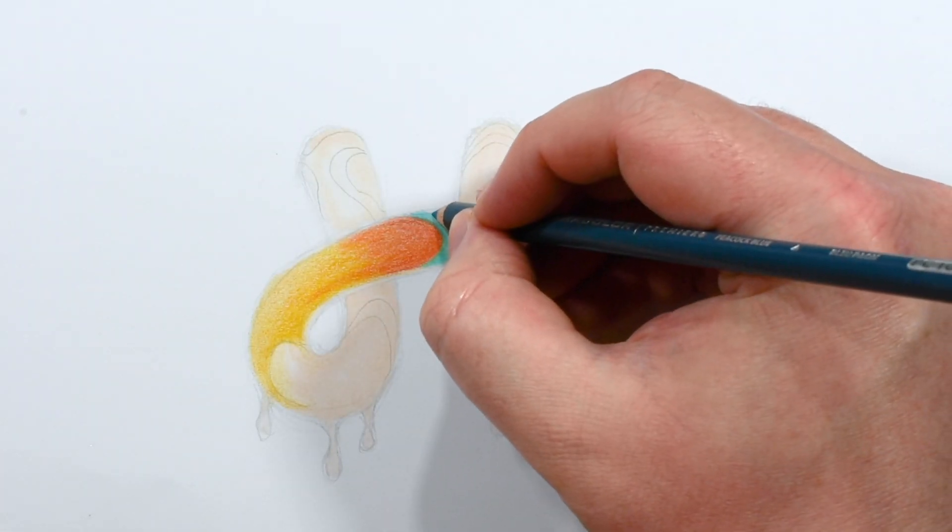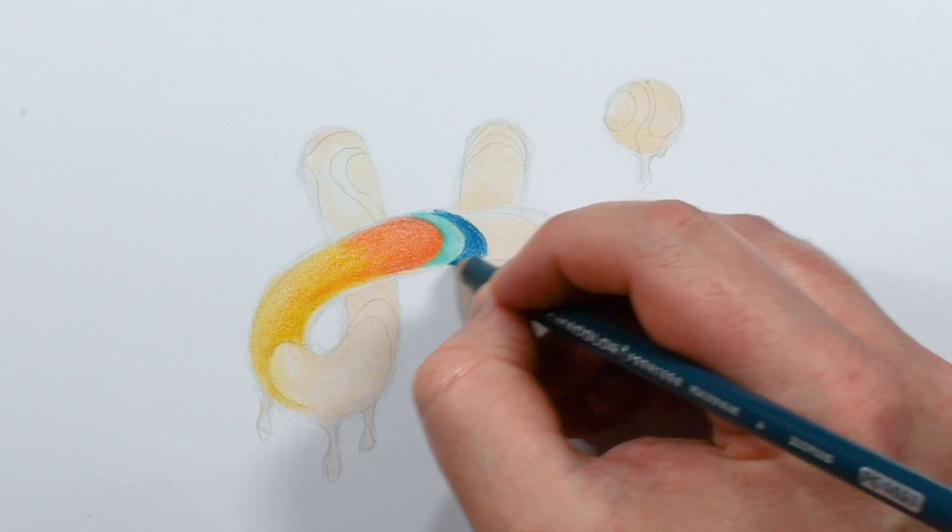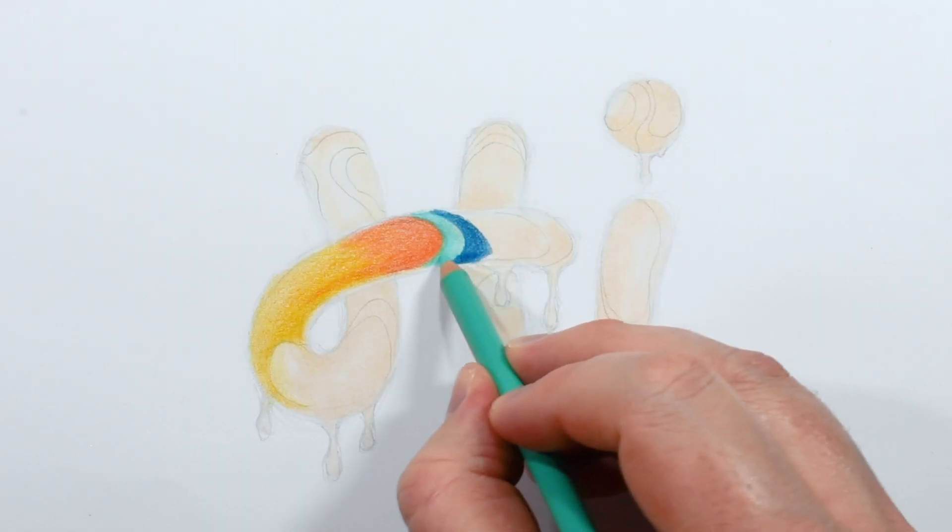Now a blue next to that and I'll be sure to shade the undersides of this letter shape darker where the shadows will be.